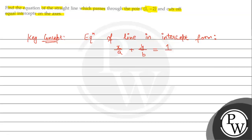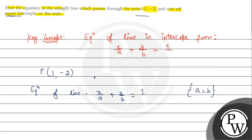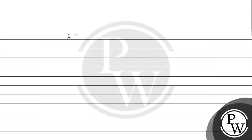First of all, passing point given hai hamarai paas, it is point (1, -2) and cut off equal intercept on the axis. So, equation of line is x upon a plus y upon b equals to 1. Intercept equal hamarai paas, which means a equals to b. So, x upon a plus y upon a equals to 1. Value a equals to b put karne ke baad, equation becomes x plus y equals to a.